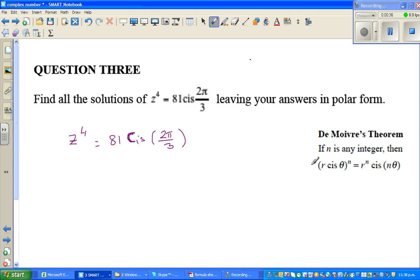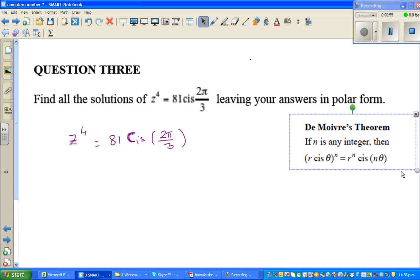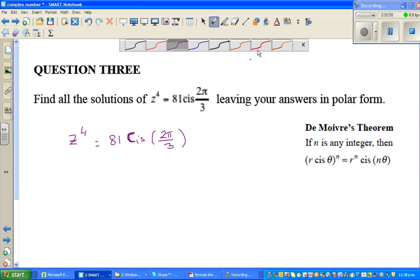So we are going to use De Moivre's rule or theorem. This is the formula sheet. If n is an integer, then r cis theta to the power n is r to the power n cis n theta. This is a very powerful theorem to solve equations of complex roots.